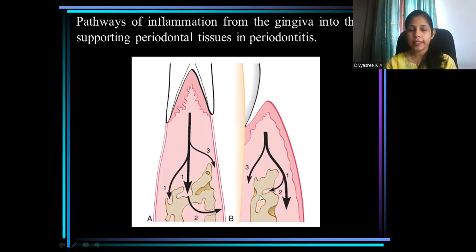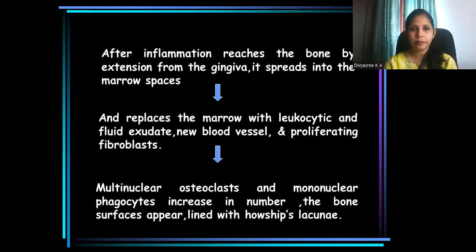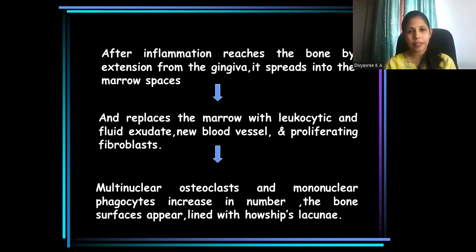There are different ways by which gingival inflammation extends into the underlying alveolar bone. Once the inflammation reaches the alveolar bone, it spreads into marrow spaces. The marrow spaces then become infiltrated by inflammatory infiltrate containing blood vessels, neutrophils, and proliferating fibroblasts. Gradually, they will be replaced by phagocytic cells and multinuclear osteoclasts resorbing bone.